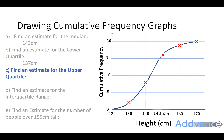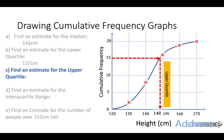Now we're going to find the upper quartile. The upper quartile is 3 quarters of the total amount — so the lower quartile was 1 quarter, the median was 2 quarters, and the upper quartile is 3 quarters. Three quarters of 20 is 15. We go across from 15 and down, and this gives us the upper quartile: 148 centimetres.